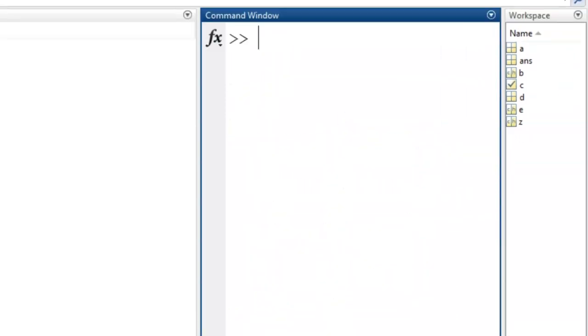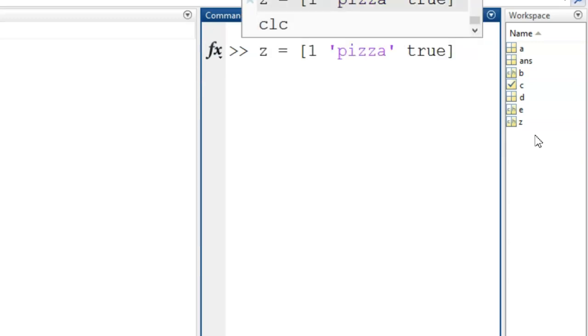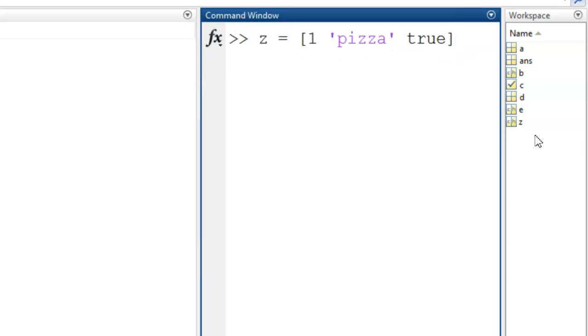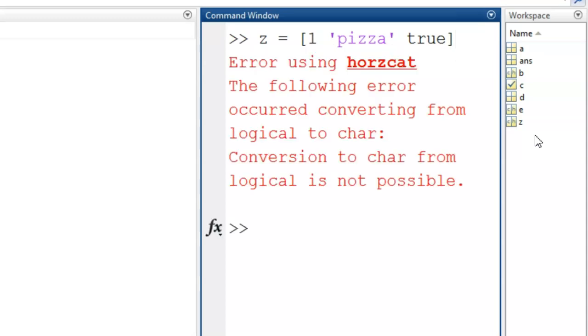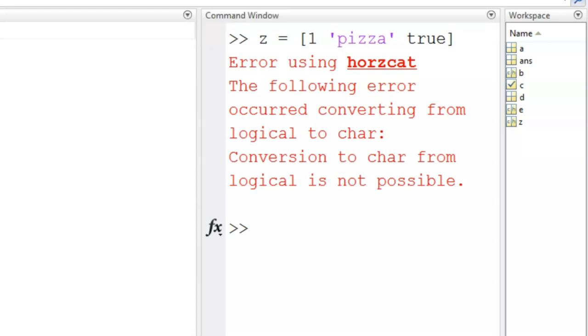The last thing I want to demonstrate is the fact that arrays all must be of the same data type. Let me show you what happens when we try to concatenate multiple data types. We see an error because this is not allowed.